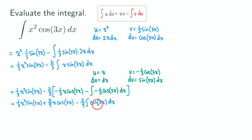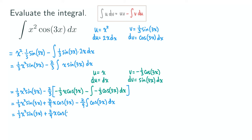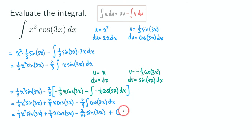Those two terms are done. We just need to integrate cosine 3x, which we have already done — its antiderivative is one-third sine 3x. So the final answer is one-third x squared sine 3x, plus two-ninths x cosine 3x, minus two-ninths times one-third sine 3x, which gives minus two over twenty-seven sine 3x, plus the constant of integration C.